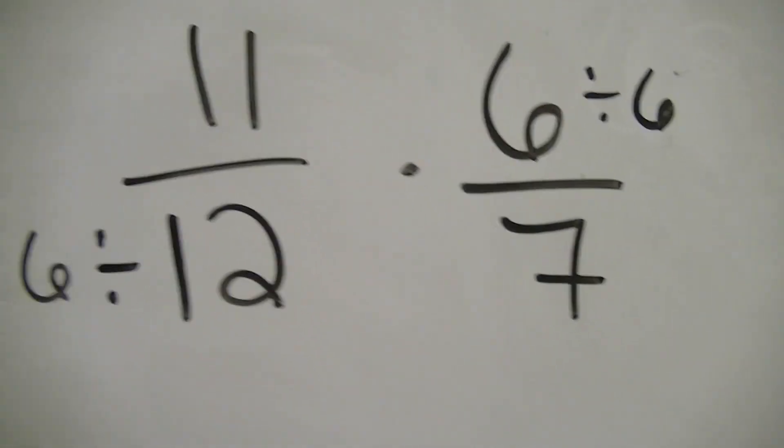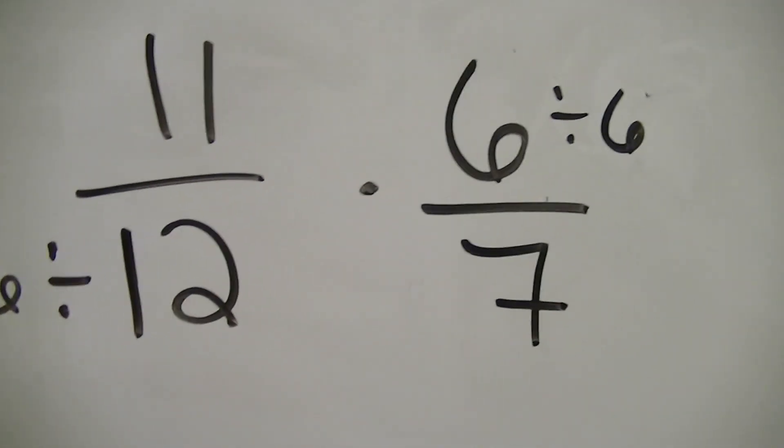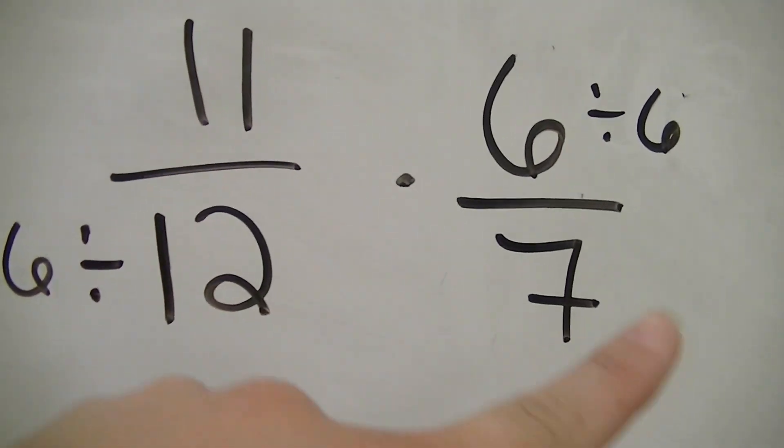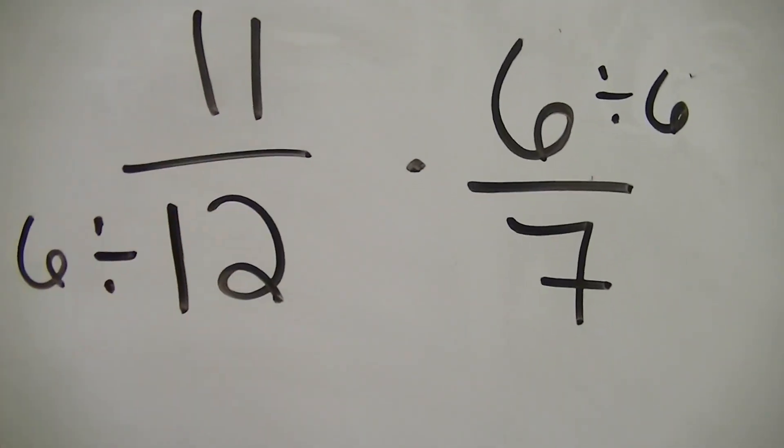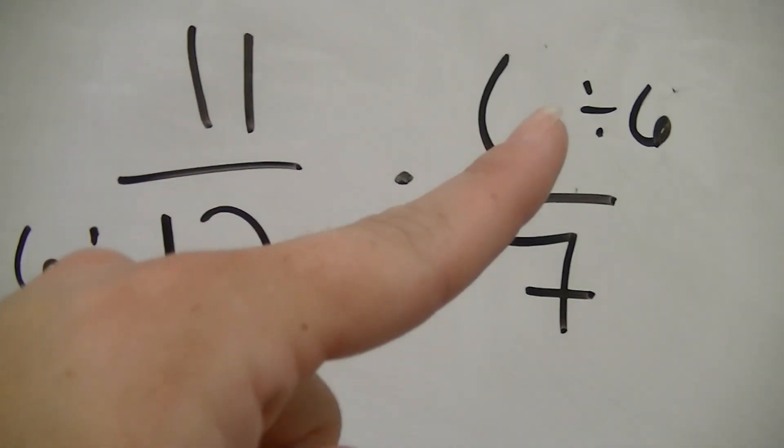But, if you notice, I have these little notes here. Divide by 6. Why? Because when we cross-cancel, we can go side to side, or we can go up and down. In this case, looking side to side, we have a 12 and a 6. What number goes into both of those? 6.